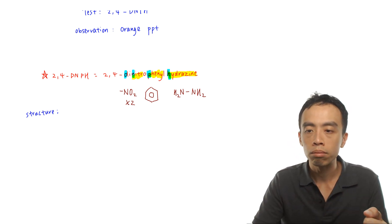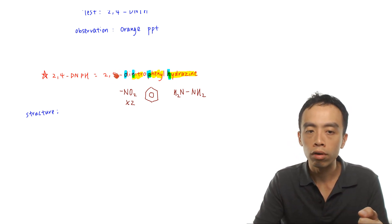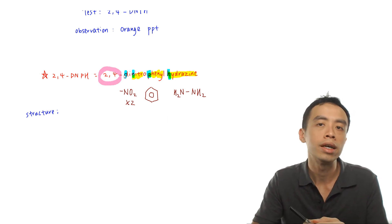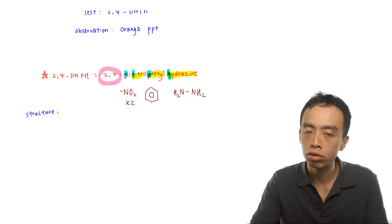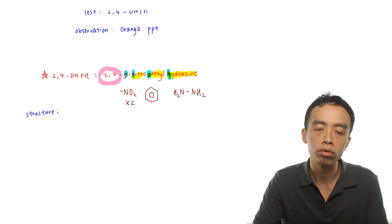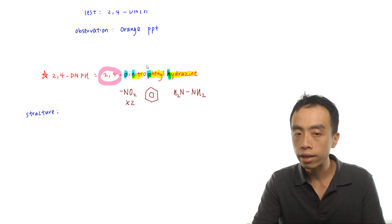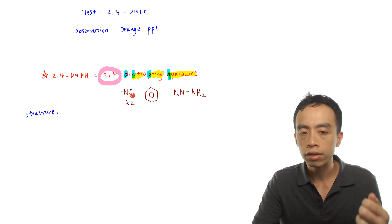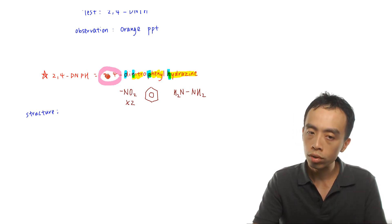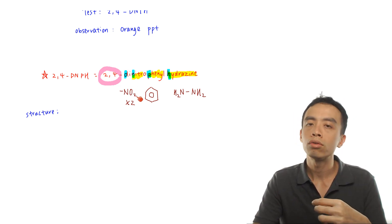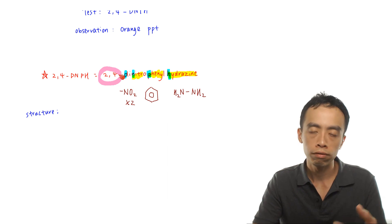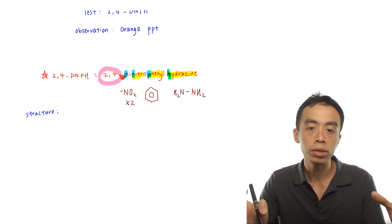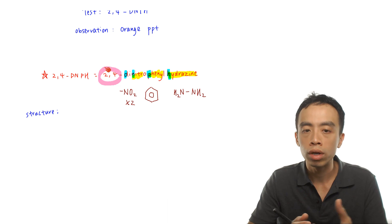Now the numbers 2,4 — remember these numbers represent the positions of the nitro groups. So if I say 2,4-dinitro, I know there are two nitro groups: the first nitro group is attached to position 2, and the second nitro group is attached to position 4. So in principle, we have all the information needed to piece everything together and draw out this structure.